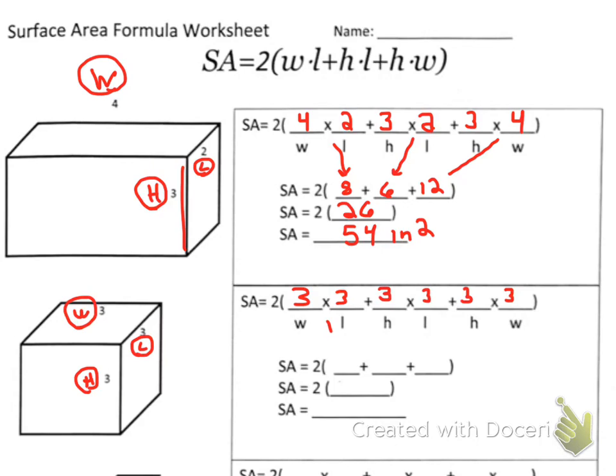3 times 3 gives me 9. 3 times 3 gives me 9. And 3 times 3 is going to give me a 9. And 9 plus 9 plus 9. We got 27. Now, 27 times 2. Use a calculator if you got them, ladies and gentlemen. What's 27 times 2? We get 54 inches squared.